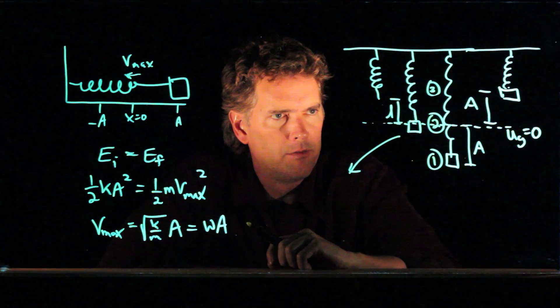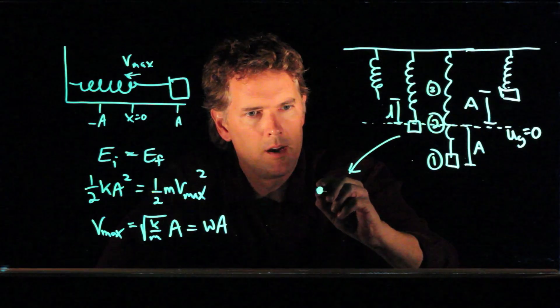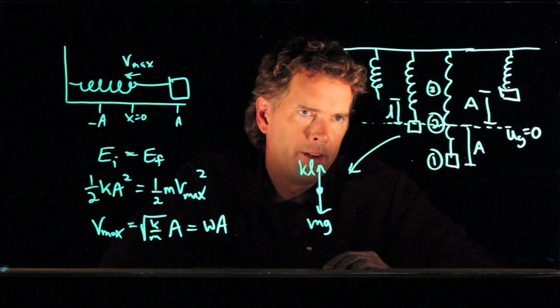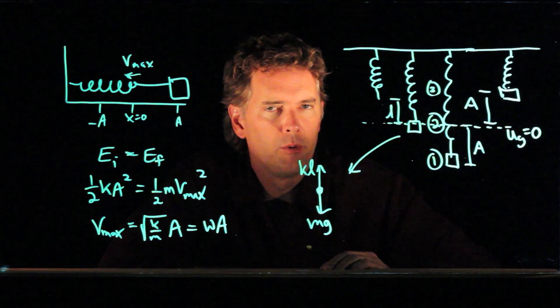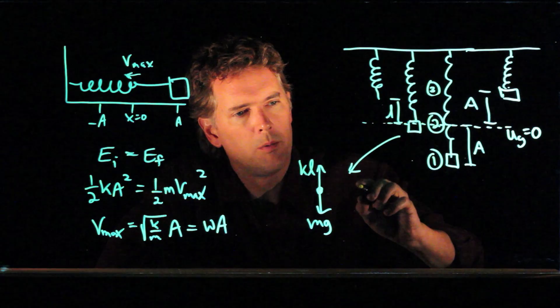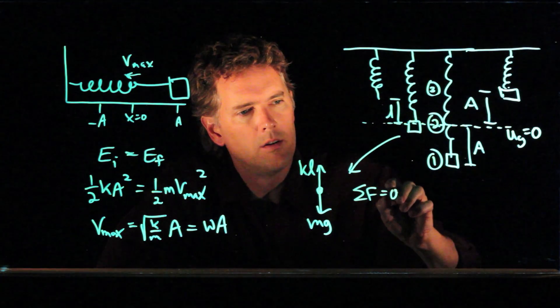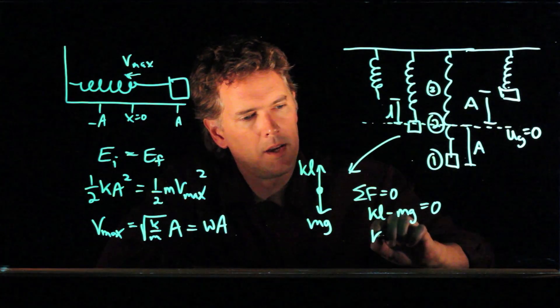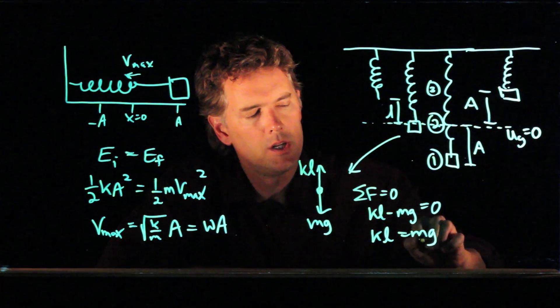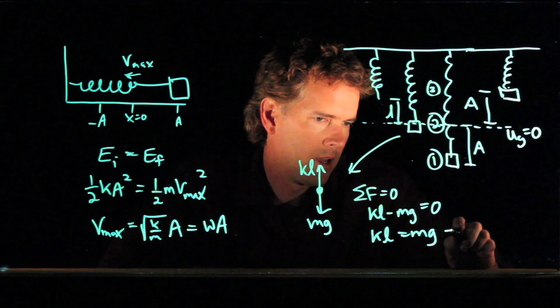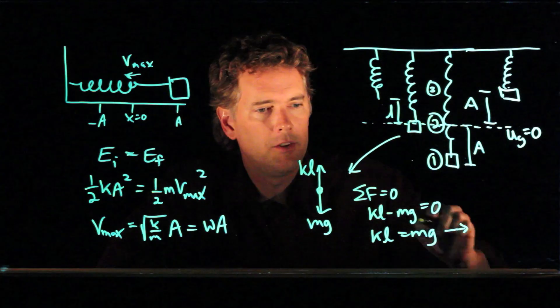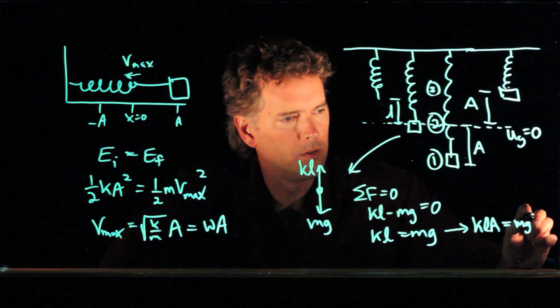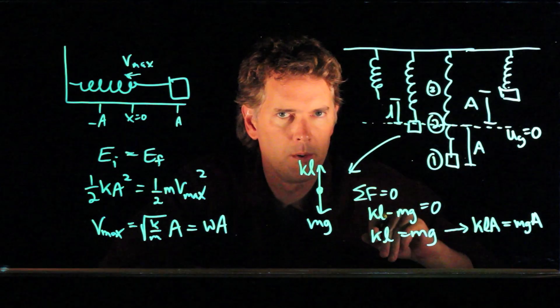When you hang the mass from the spring, there is gravity acting on that mass, but there is the spring force holding it up. And if it stretches a distance l, then the spring force is equal to k l. And so now look what we have. Those forces have to be zero when it's just hanging there. And so we get k l minus m g equals zero or k l equals m g. And now let's do one more little trick, which we will use later. Let's multiply both sides of this equation by capital A. K L A equals M G A. And we'll see why we did that in a second.